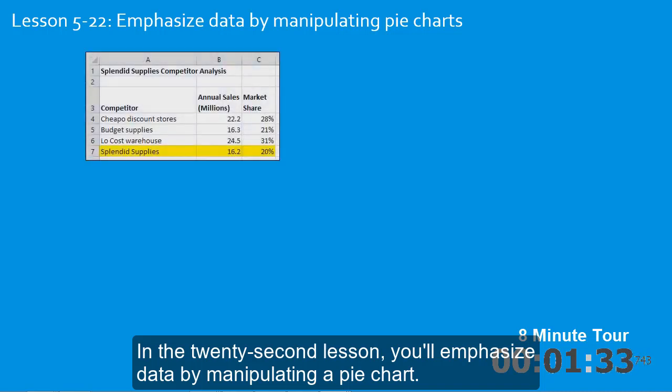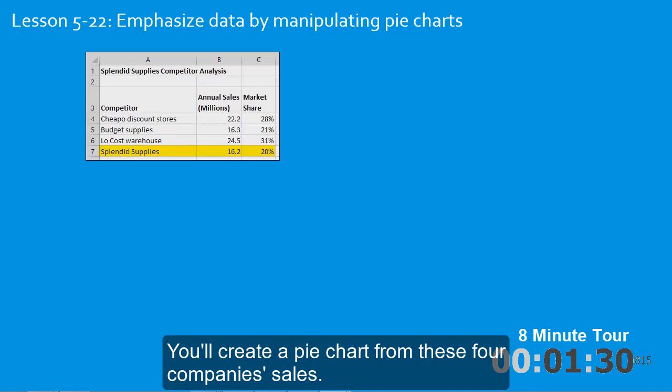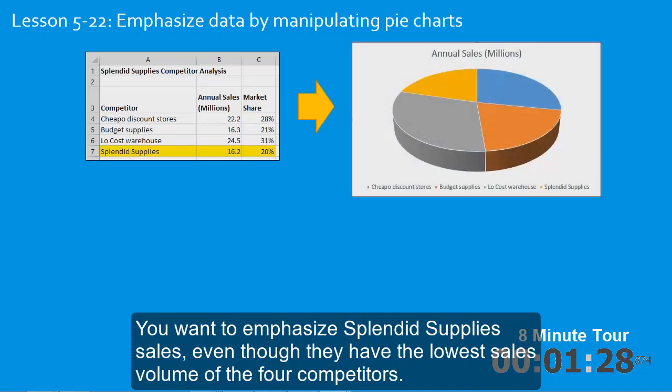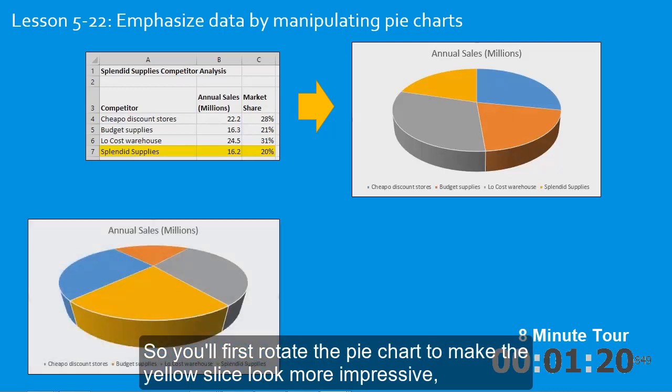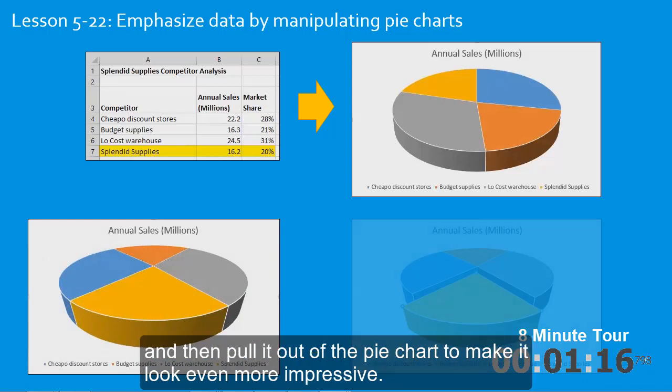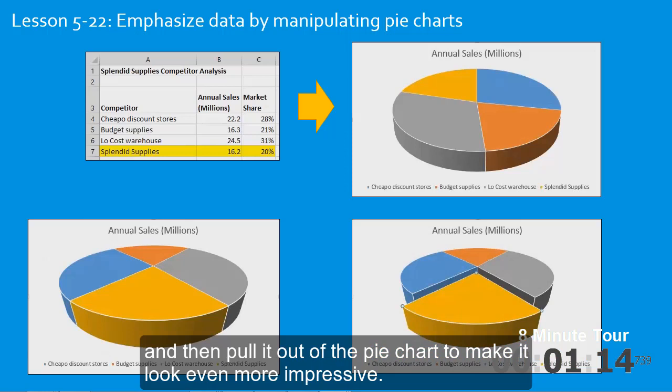In the twenty-second lesson you'll emphasize data by manipulating a pie chart. You'll create a pie chart from these four companies sales. You want to emphasize splendid supply sales even though they have the lowest sales volume of the four competitors. So you'll first rotate the pie chart to make the yellow slice look more impressive, and then pull it out of the pie chart to make it look even more impressive.